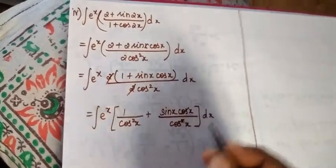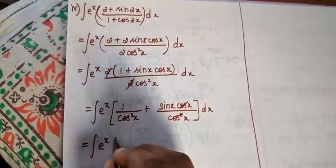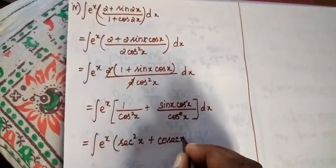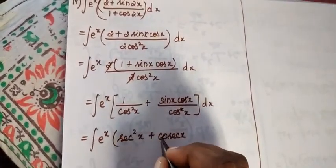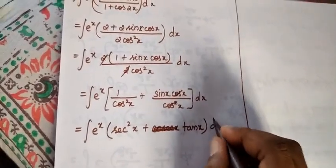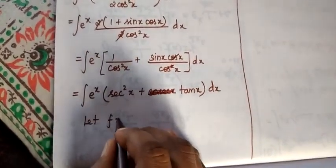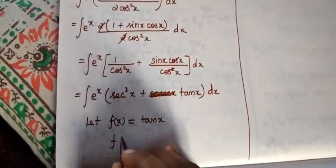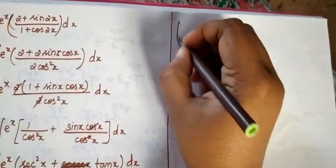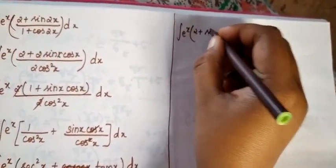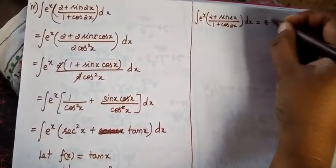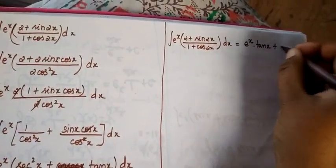We simplify: 1 divided by cos²x is sec²x, and sin x divided by cos x is tan x. So the integral becomes eˣ (sec²x plus tan x) dx. Let f(x) equal tan x, then f'(x) equals sec²x. This matches the pattern, so integral eˣ (2 plus sin 2x) divided by (1 plus cos 2x) dx equals eˣ tan x plus c.